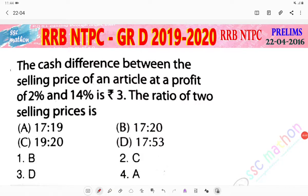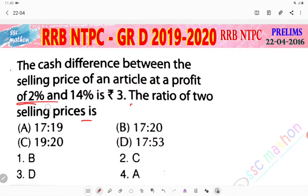Hello everyone. Welcome back to SSM. I will introduce the question here. The cash difference between the selling price of an article at a profit of 2% and 14% is Rs. 3. The ratio of the two selling prices is. This is a repeat question.